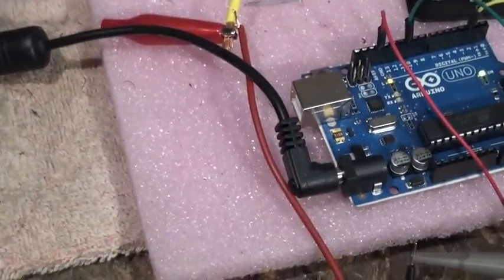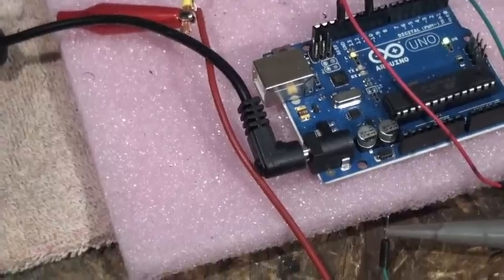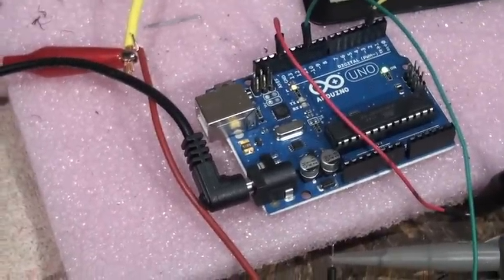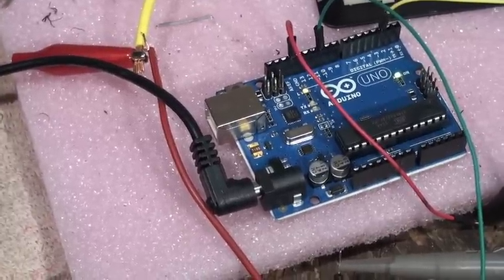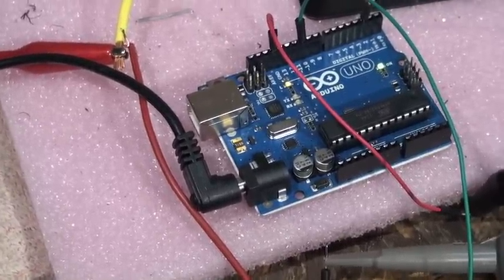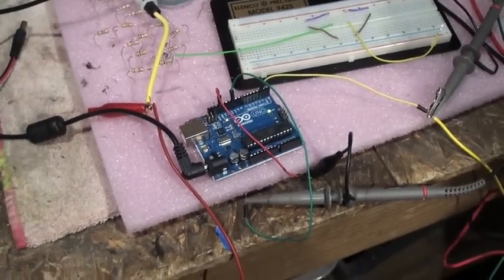This just made me certain that I could run the Arduino off the 12 volts coming off of the signal. I'm going to try to set that up now.